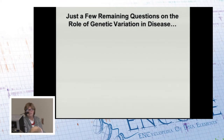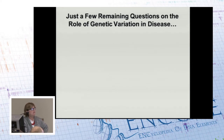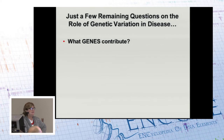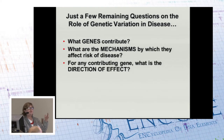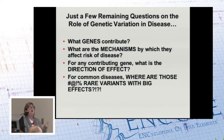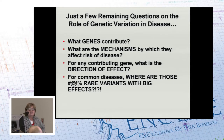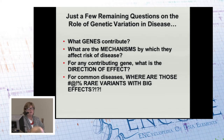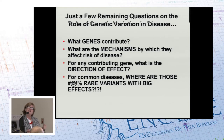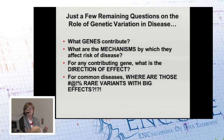In the common disease space there's been a lot of progress and we just have a few questions left: What are the genes? What are the mechanisms? What are the directions of effect? Where are those rare variants with big effects? It's like 10-trial learning where we're always surprised when the effect sizes are lower than we hope, and the first generation of studies with new technologies are always underpowered relative to where it turns out the effect sizes are.